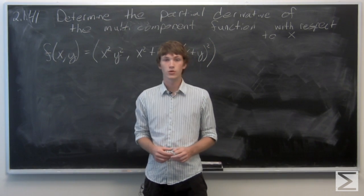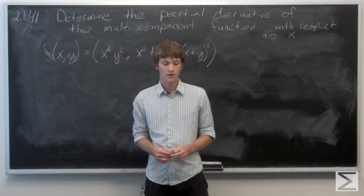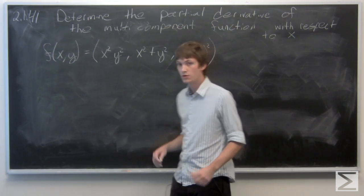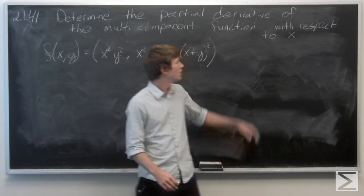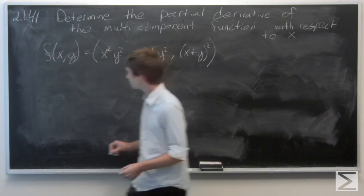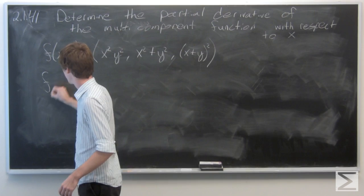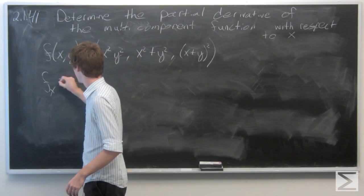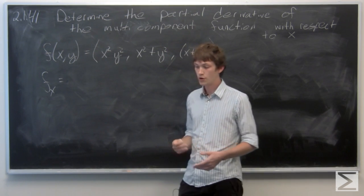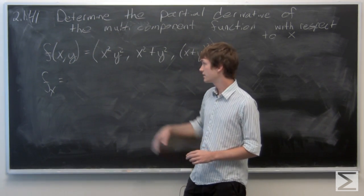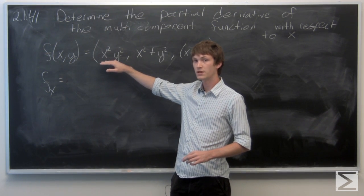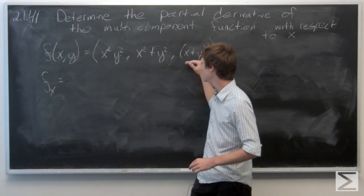In this problem, we're asked to find the partial derivative of a multi-component function, and we're asked to compute the partial derivative with respect to x. To compute the partial derivative with respect to x, we're just going to take the partial derivative with respect to x of each of the components.